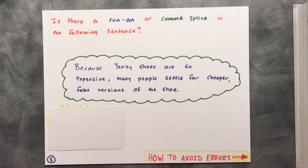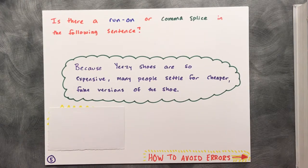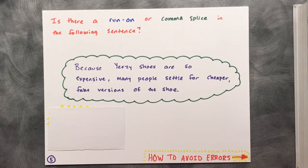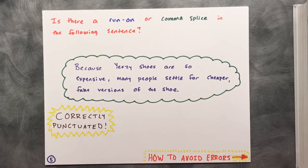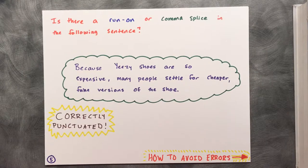Now it's your turn. Is there a run-on or comma splice in the following sentence? If you said it's a complete, correctly punctuated sentence, you're right. Even though both parts of the sentence have a subject and verb, the dependent word 'because' keeps the first idea from expressing a complete thought.